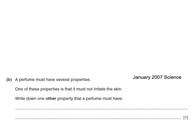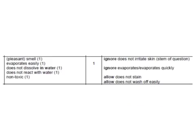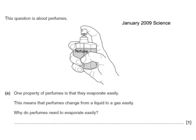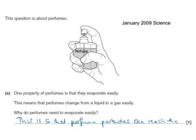Now some past exam questions. A perfume must have several properties — one of these is that it must not irritate the skin. Write down one other property that a perfume must have. The answer is: it must not be soluble in water. As you can see, there are quite a number of different possible answers for that question. The next question: one property of perfumes is that they evaporate easily, meaning they change from a liquid to a gas easily. Why do perfumes need to evaporate easily? This is so that perfume particles can reach the nose.